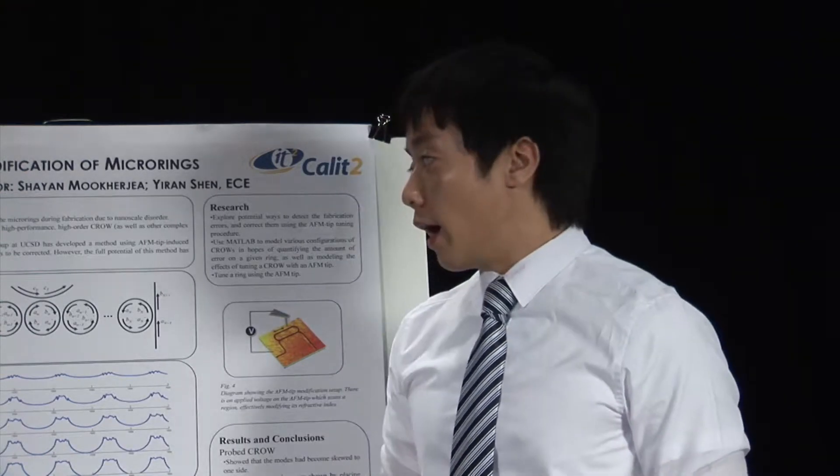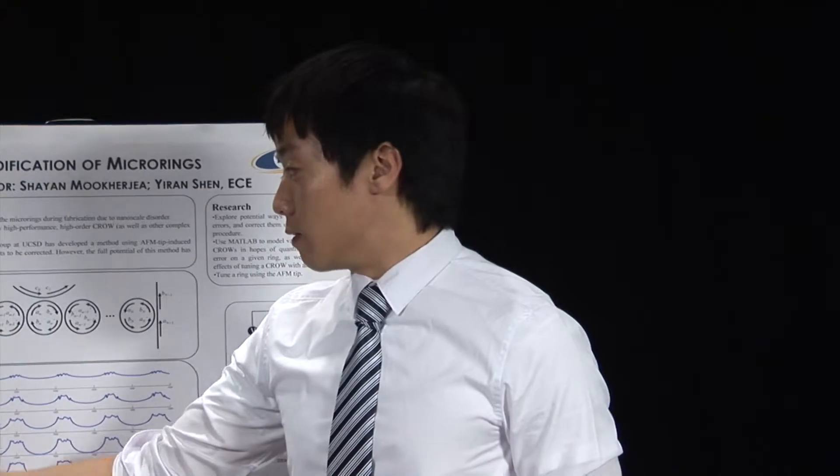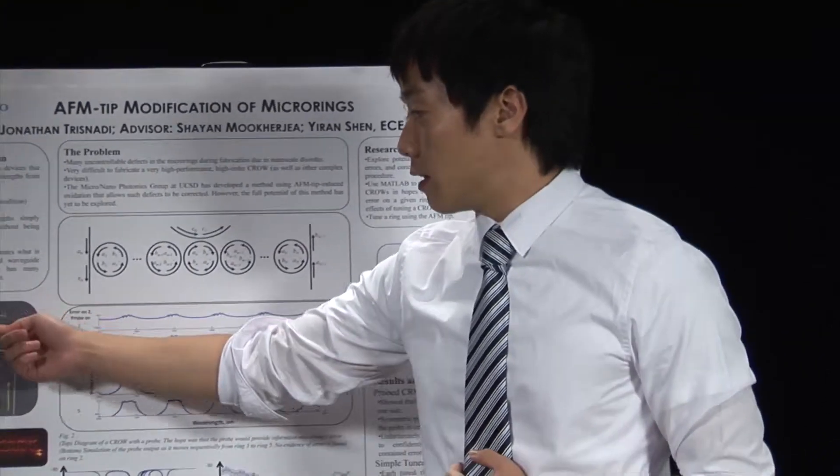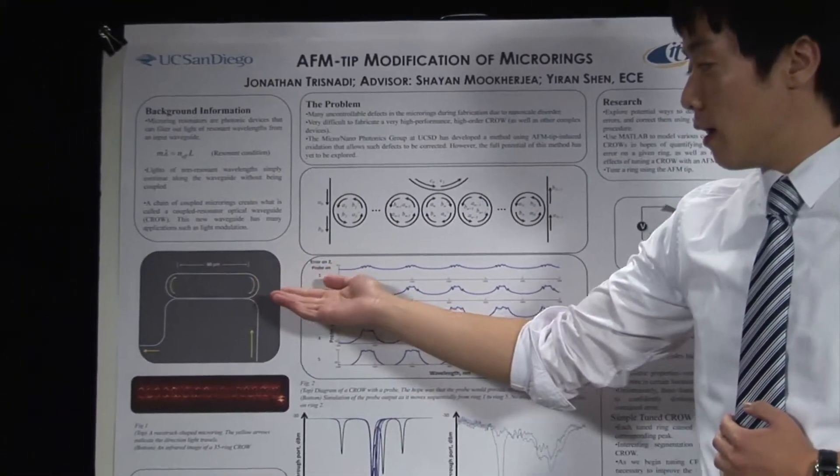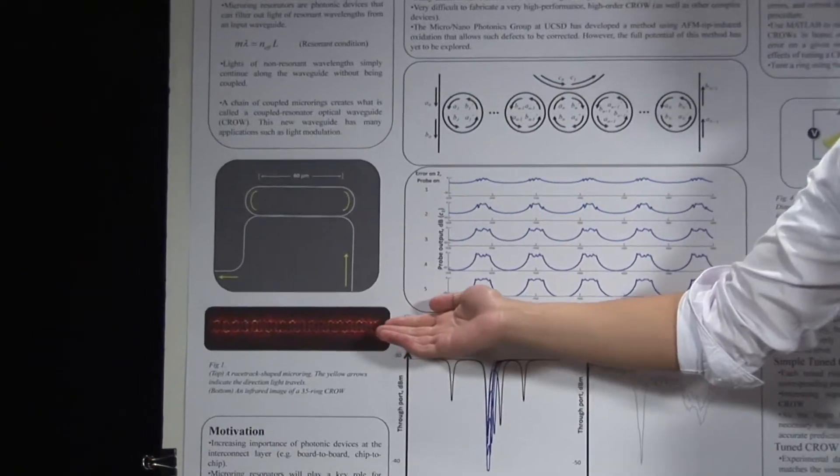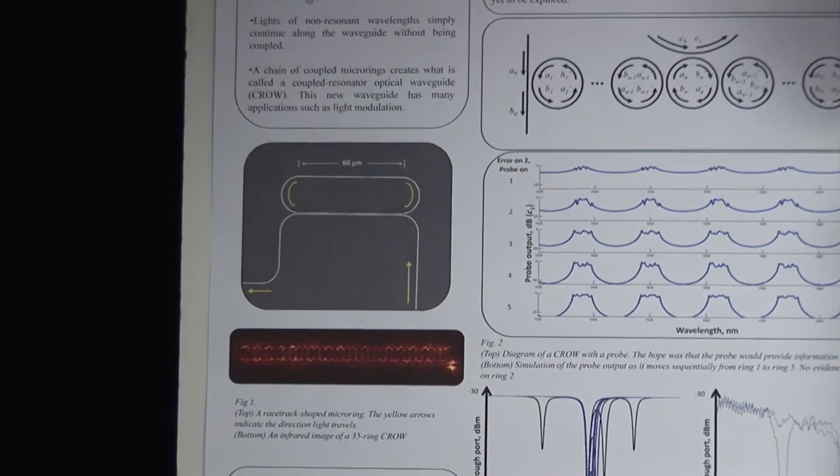And if you chain many of these micro rings together, you form what is called a coupled resonator optical waveguide or a CROW. And here are some pictures of a micro ring and a CROW. This is a racetrack shaped micro ring, and here is a 35 ring CROW. And this image is taken with an IR camera.